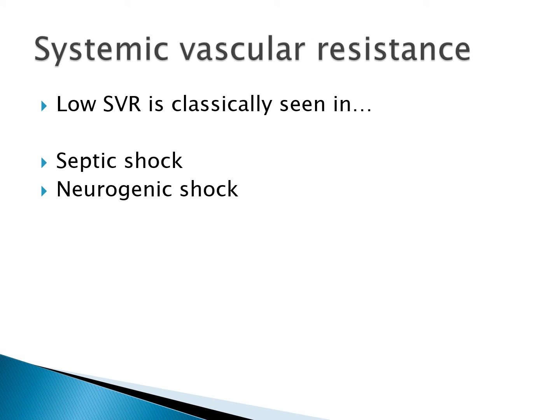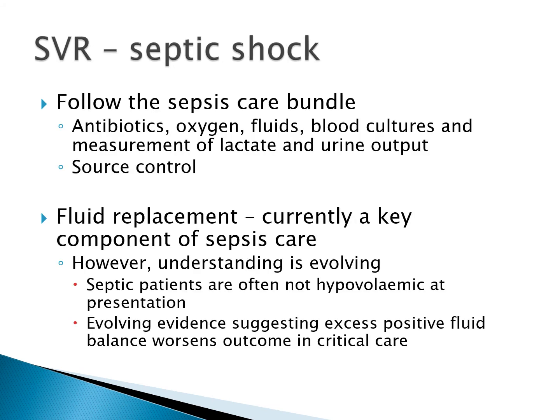A low SVR is classically seen in two scenarios in intensive care: septic shock and neurogenic shock. In septic shock, follow the sepsis care bundle — give antibiotics, oxygen, and fluids, take blood cultures, and measure lactate and urine output. Source control is key.